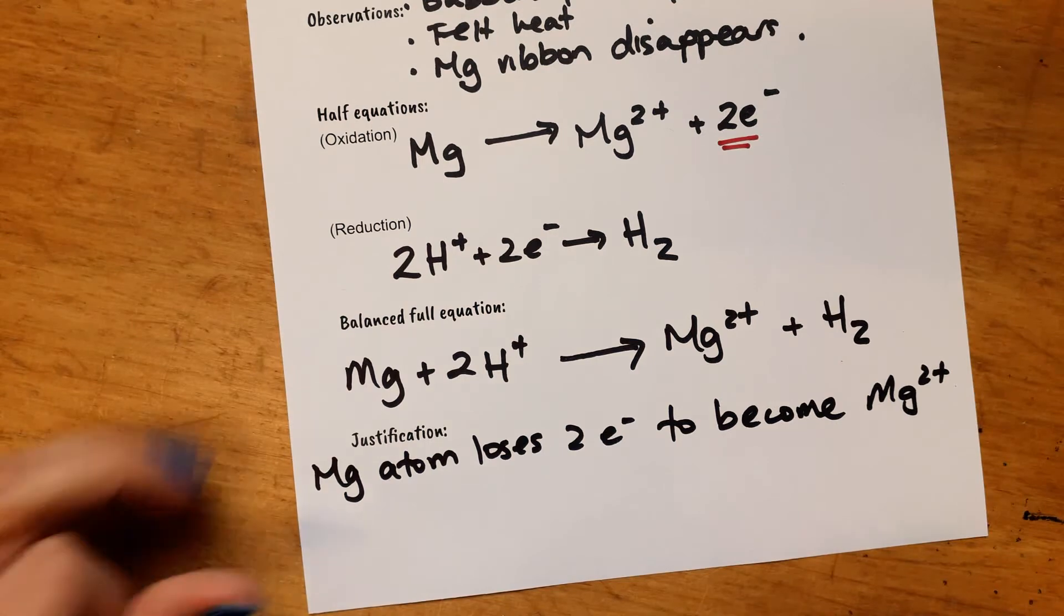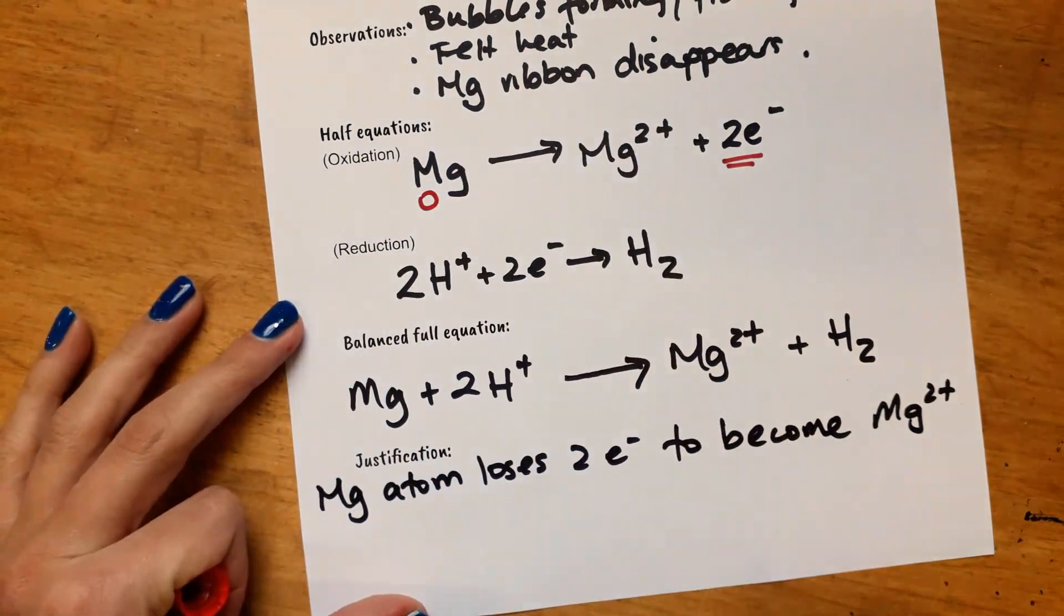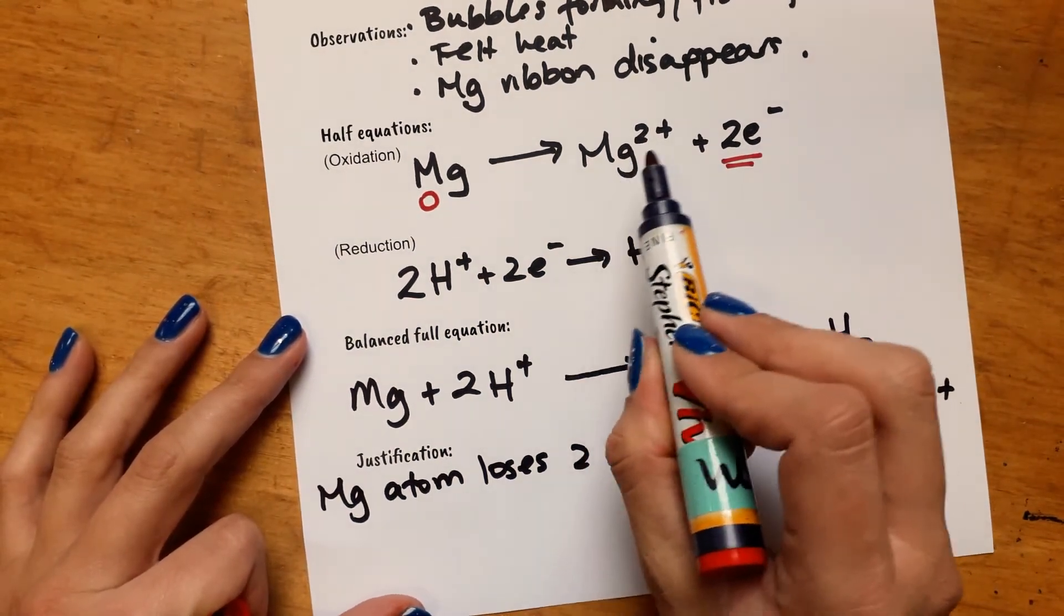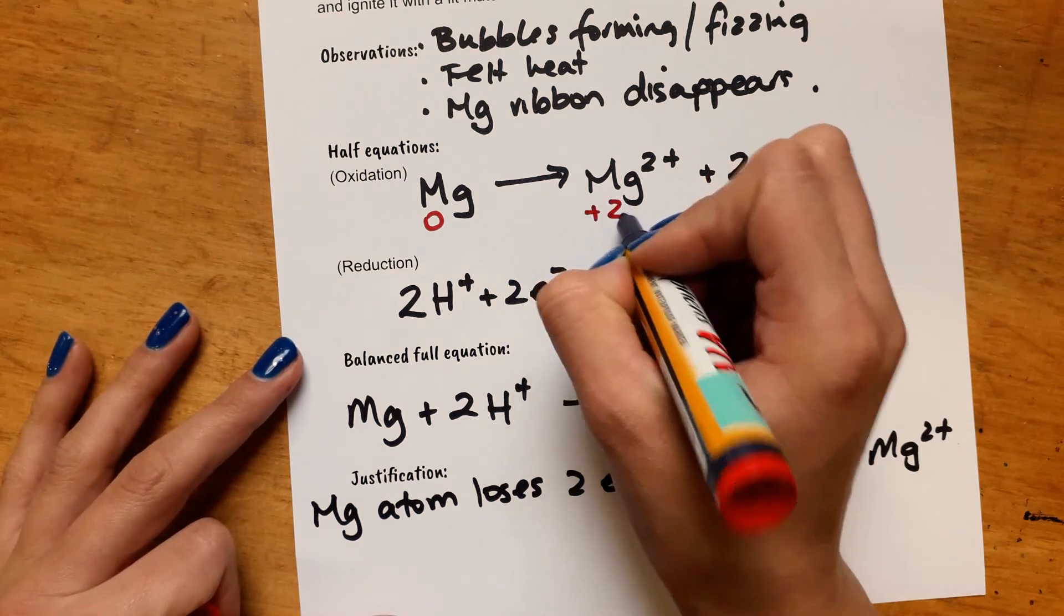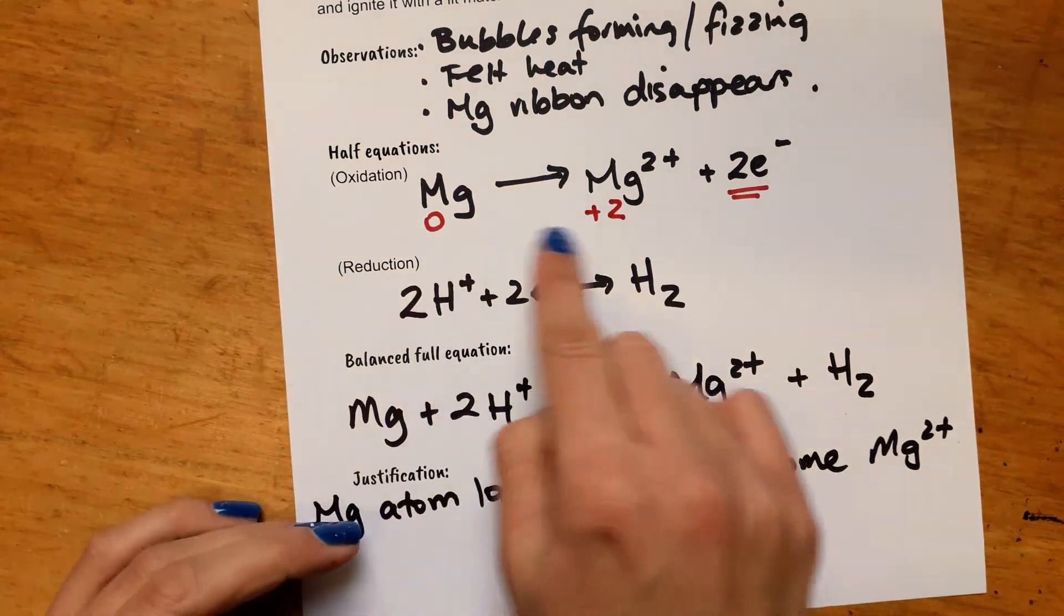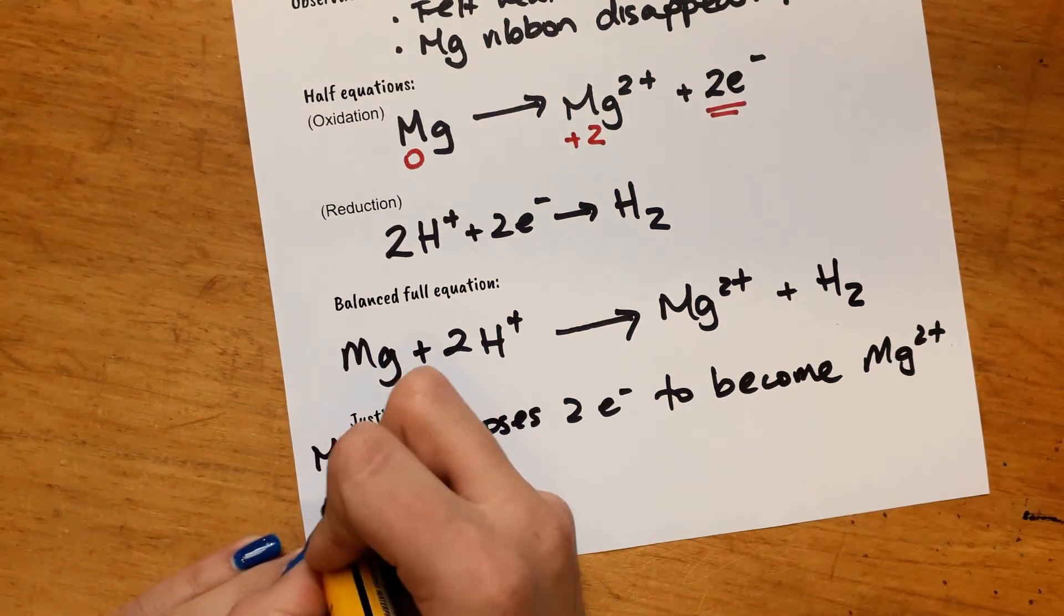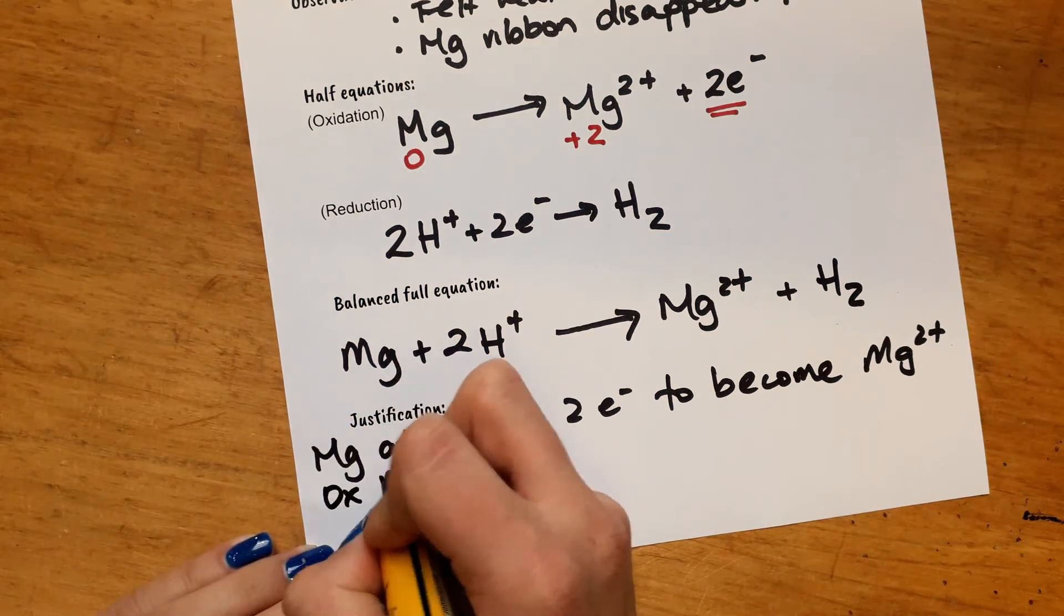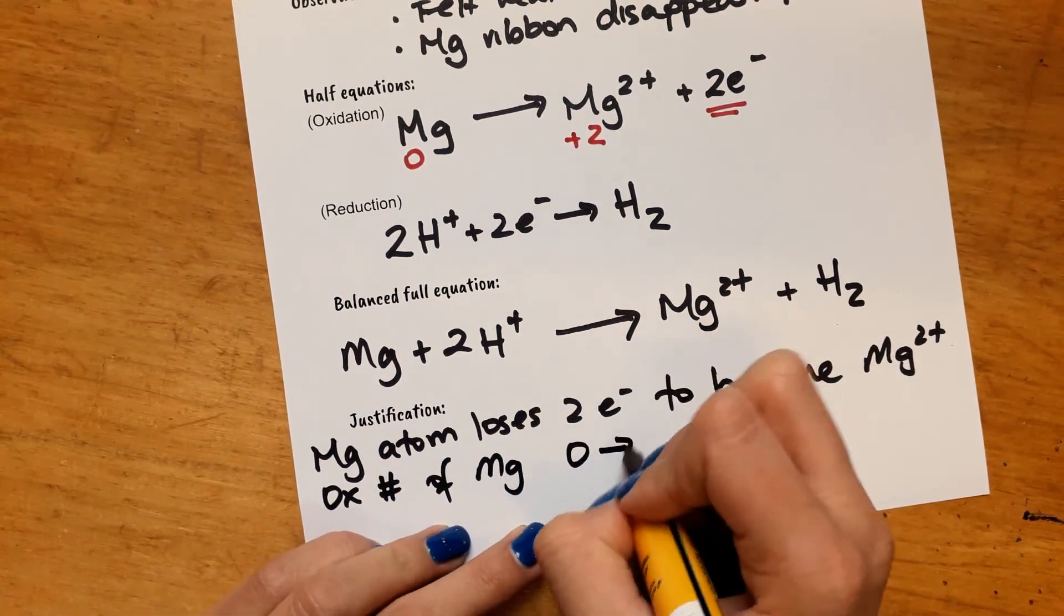You could also use oxidation numbers. You can choose which one is better for you to do. So magnesium is an element with an oxidation number of zero. And then as a single ion, it's going to have the same oxidation number as the ions charge. So it's going to be a plus two here. So that's an increase in oxidation number that implies that oxidation has occurred. And you could also say oxidation number of magnesium goes from zero to two, which is an increase, which means oxidation has occurred.